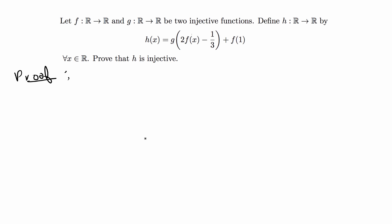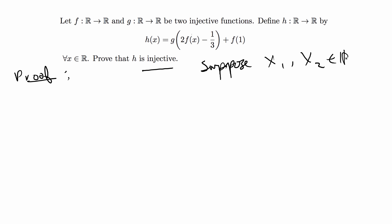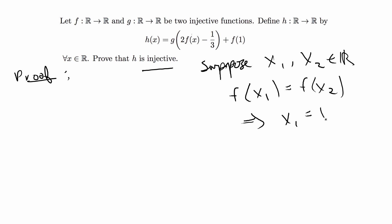Before I go into the proof, let's go over again what injectivity is and how you prove it. The definition of injective is: suppose you have some numbers x1, x2 belonging to the reals, and you have a function f. If f of x1 is equal to f of x2 and this implies that x1 is equal to x2, then that is an injective function. So if this holds true — you plug in real numbers x1 and x2, they don't have to be the same going in, but they must be equal when the function outputs are equal — that's what an injective function is.